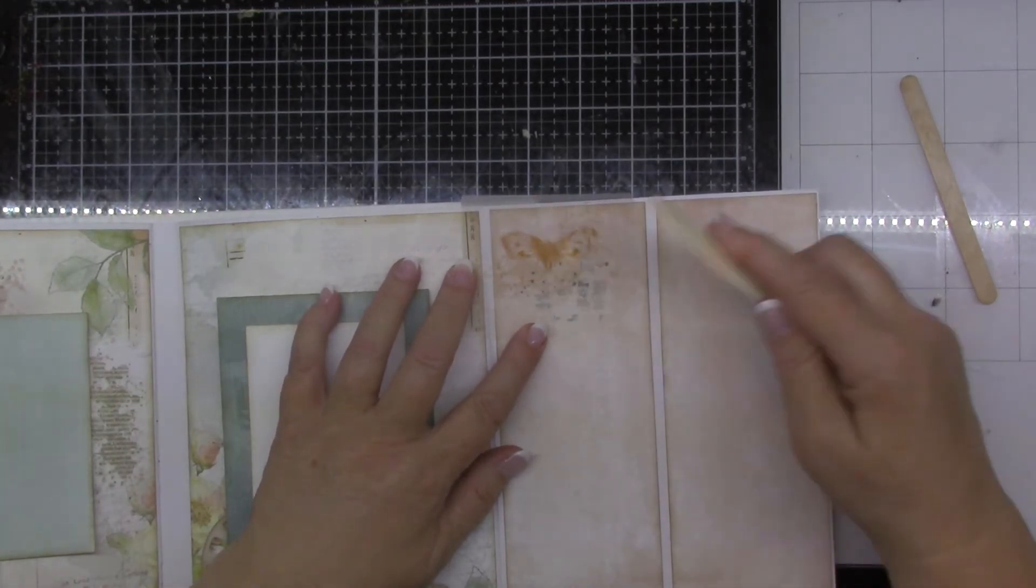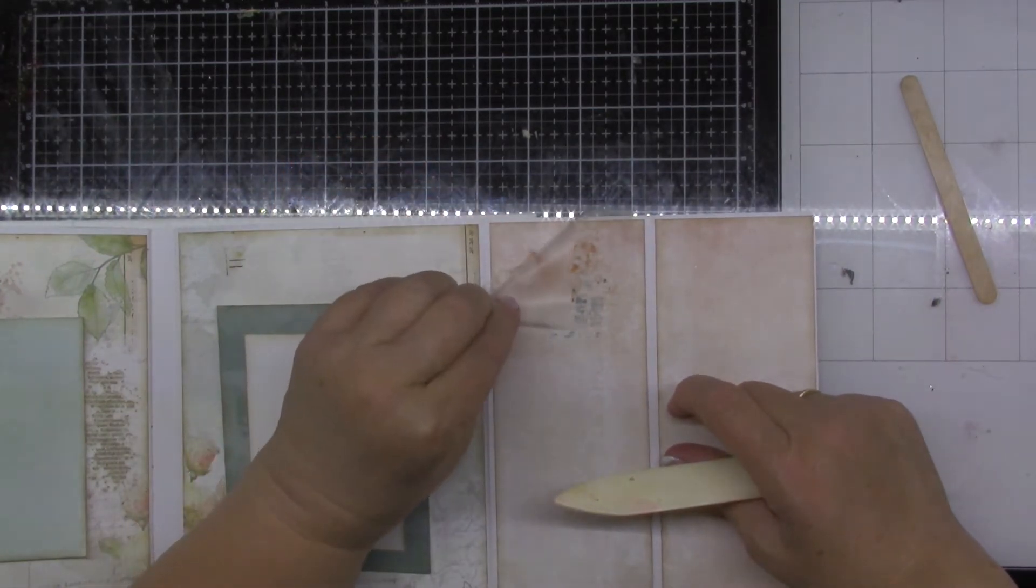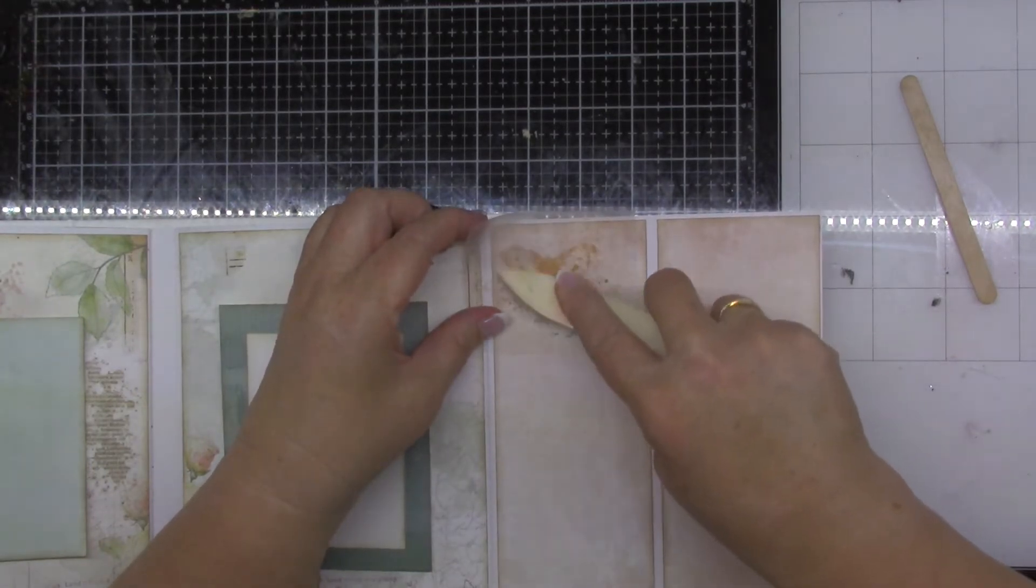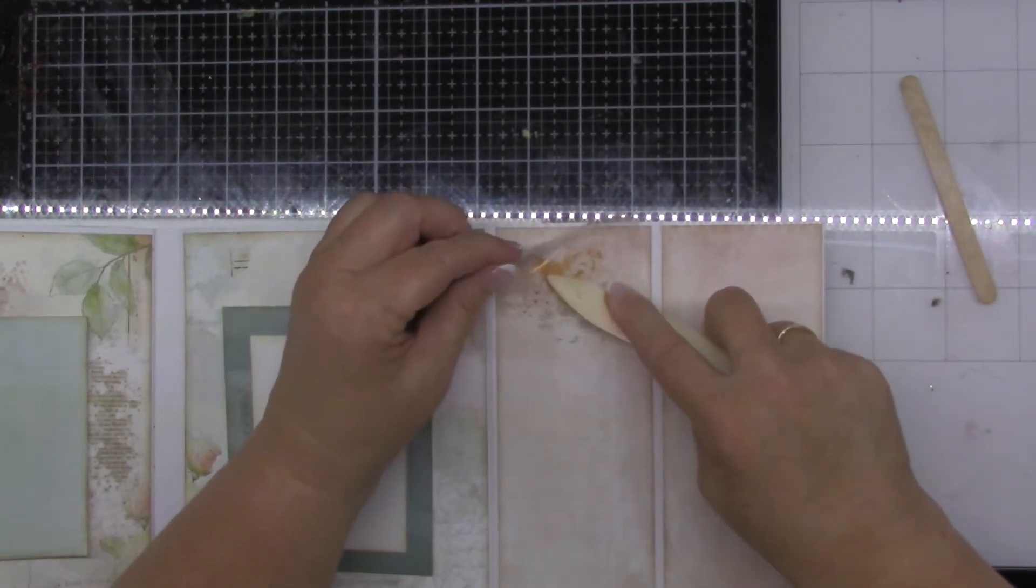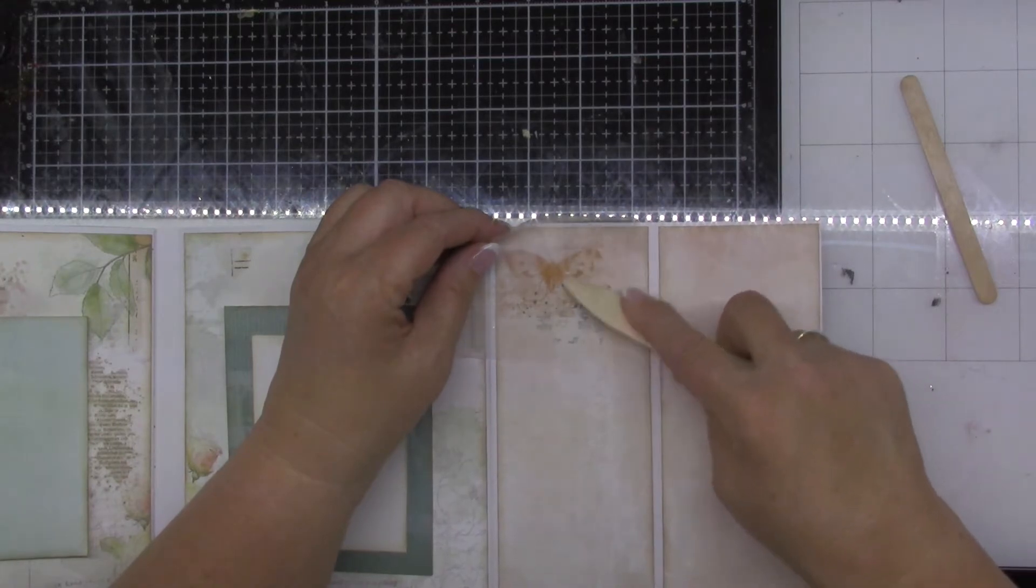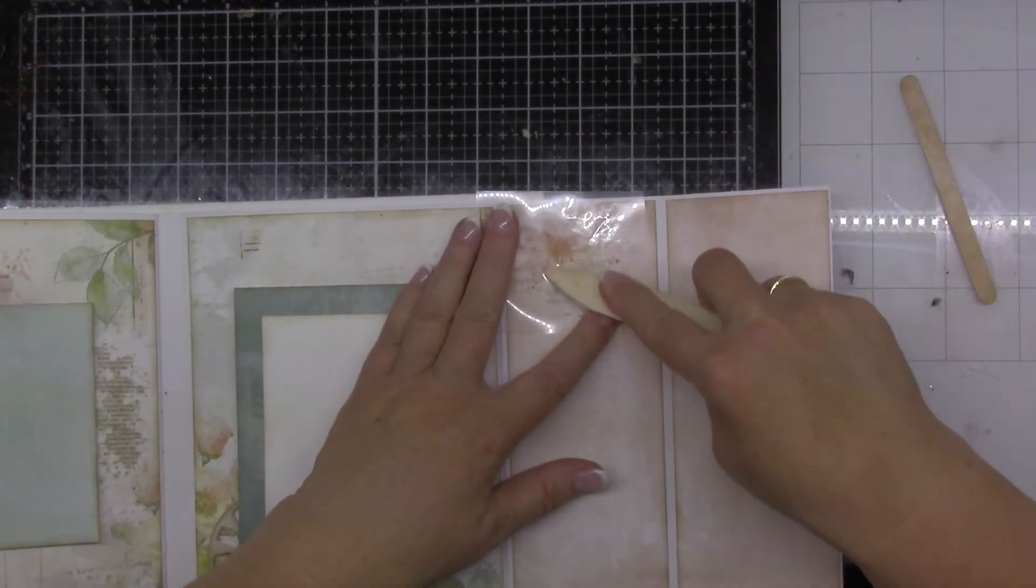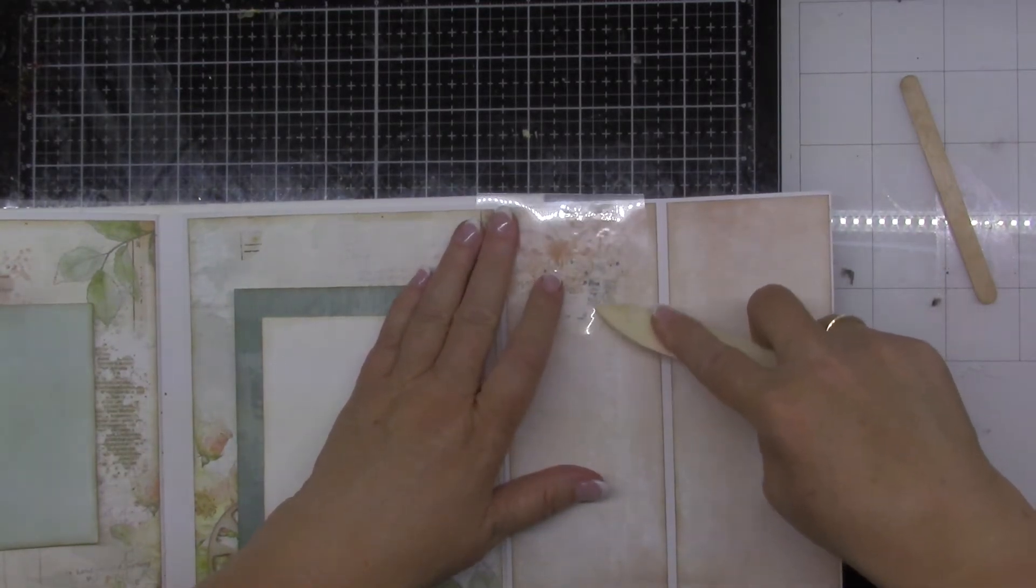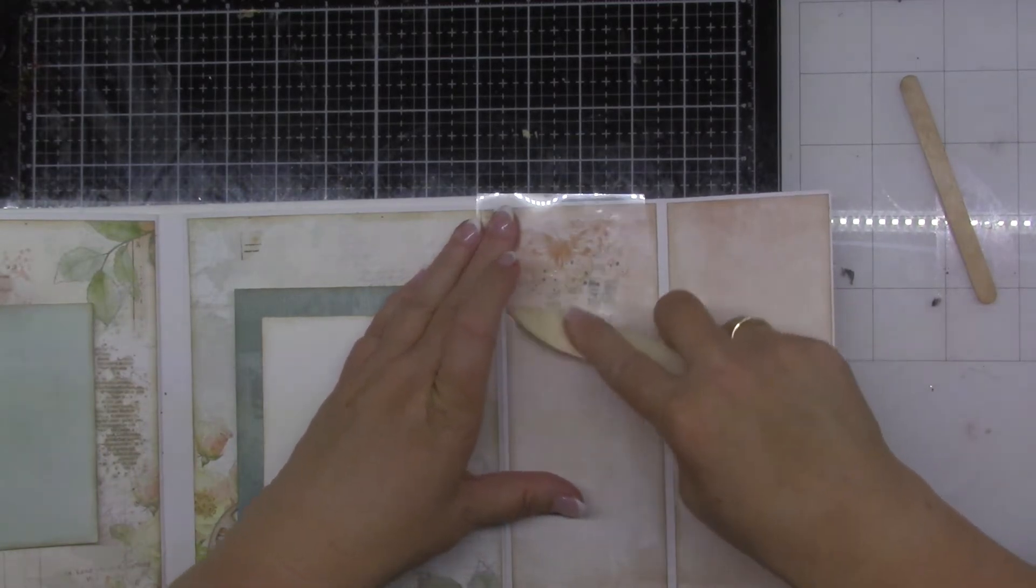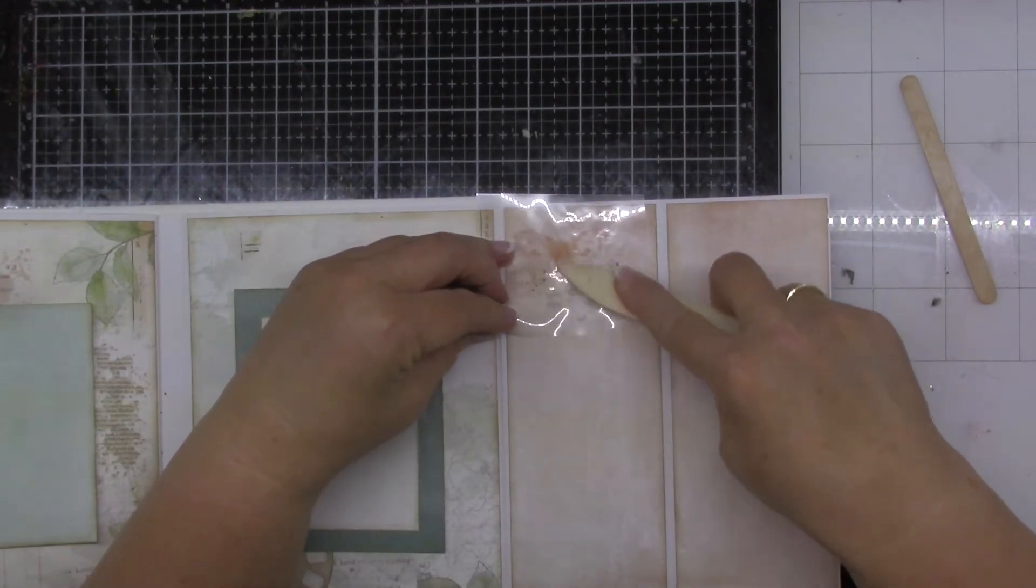When I do lift it up, if I lift up the clear and I see any of the image sticking to the clear, I can put it down and rub it again. Make sure his little antennas are down there. Now the surface I'm working on isn't flat - I've got this whole book underneath there. It's going to be better if I have a flat surface so that I can actually put pressure on it.